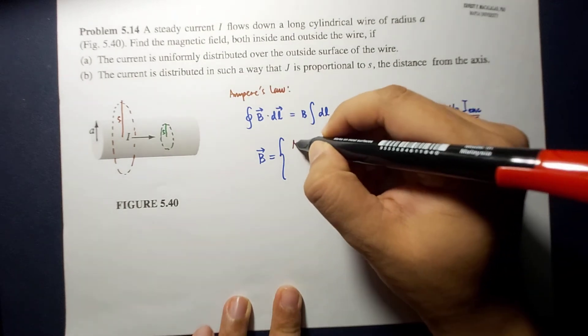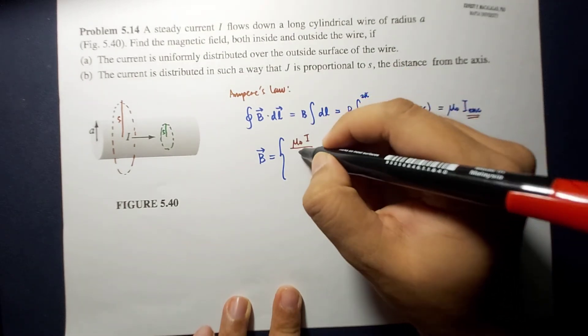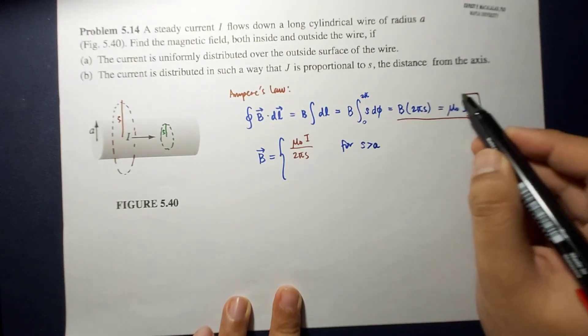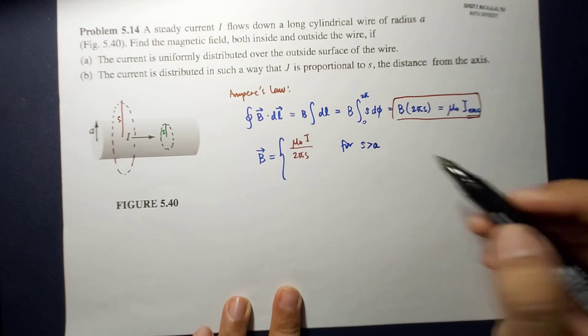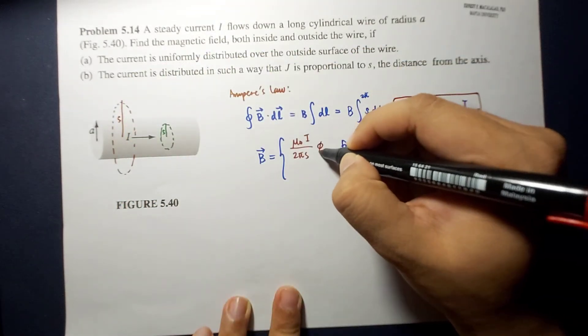So, basically, this is equal to mu naught I over 2pi S from here. And then, the direction is along the phi direction.